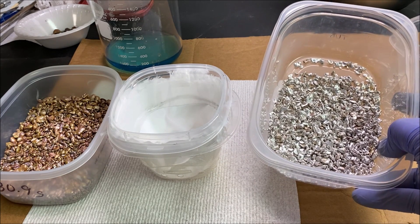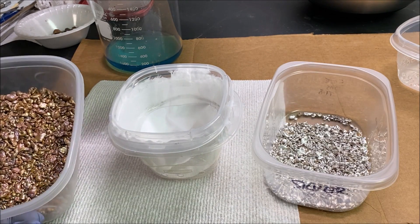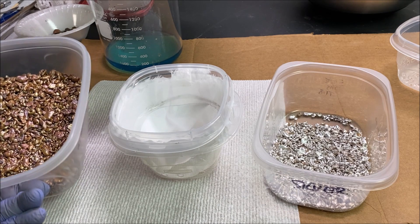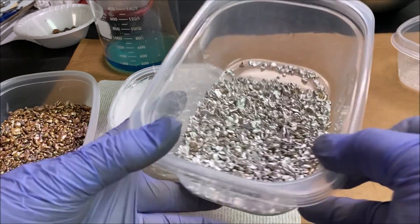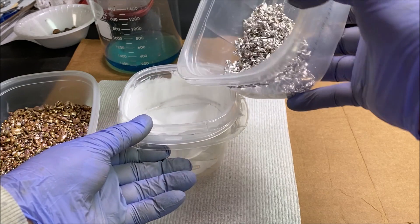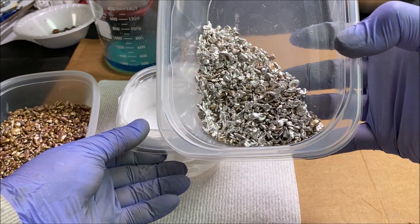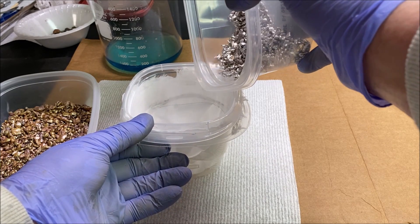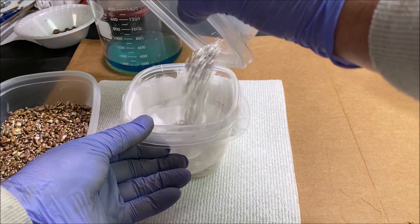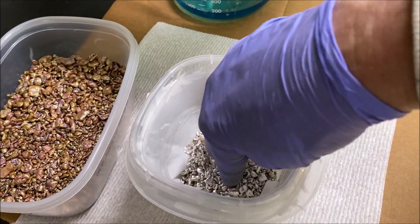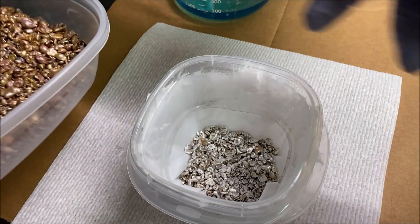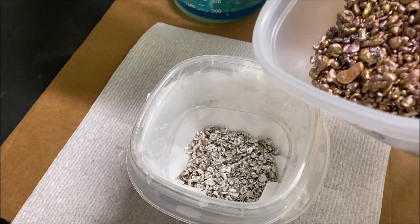Now I've got to figure out whether I want to put this shot in first or this shot in first. Let's see, we'll go with this one. I'm going to fill up the anode basket with our silver shot that we made from the silver chloride conversion. It's going to go in the bottom of the anode basket first. There's our silver from the silver chloride conversion.